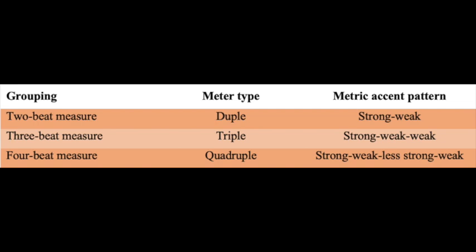A 3-beat measure is in triple meter, which is pretty self-explanatory. In this case, our stresses go strong, weak, weak — strong, weak, weak. This is exemplified in waltzes, which I'm sure you've heard, where you go: do, do, do, do, do, do, do, do, do, do, do, do.